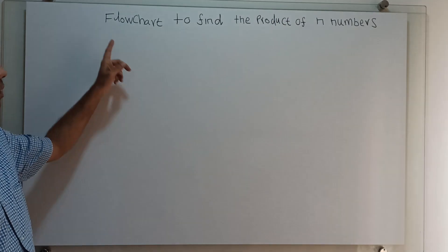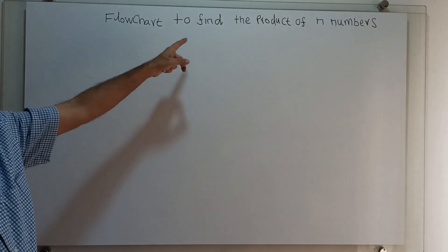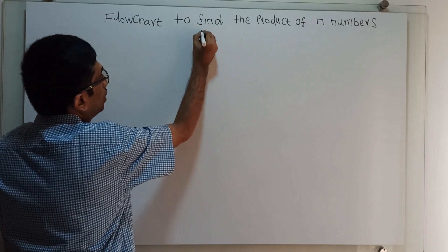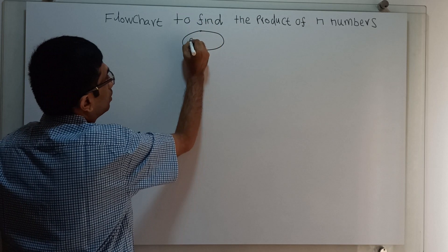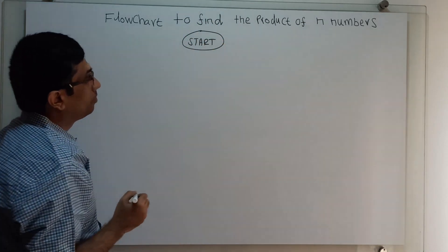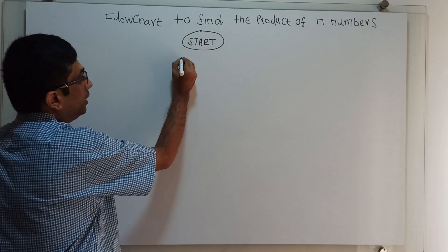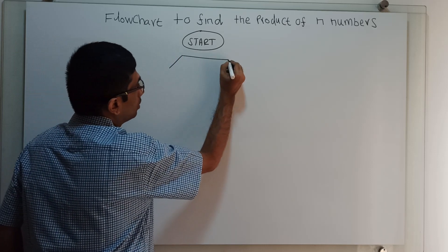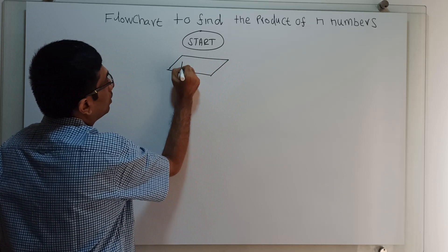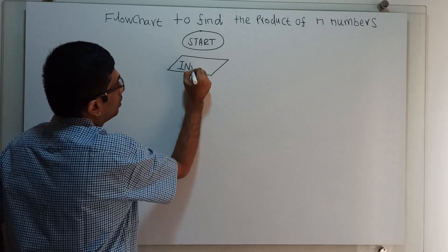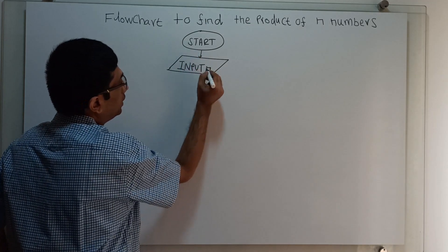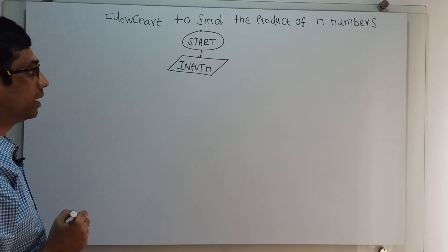Hello friends, we are going to draw a flowchart to find the product of n numbers. This is the logical start of the flowchart. I am obtaining an input n, where n stands for the range up to which number we have to calculate the product.